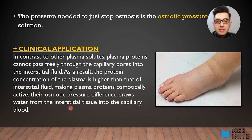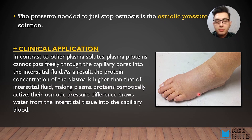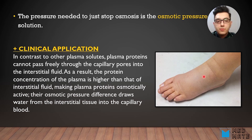If the concentration of plasma proteins is low, a situation called edema occurs. Edema can be due to many things like inflammation, but in patients with impaired liver disease, the concentration of plasma protein — for example, albumin — is low, and water moves from the vessels into the interstitium and accumulates there. As you can see, there is edema in these patients.